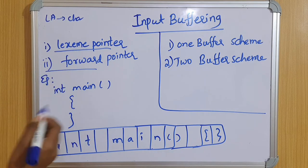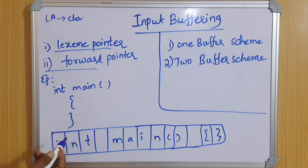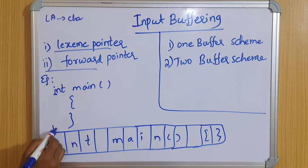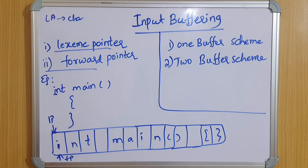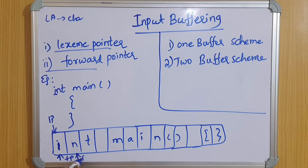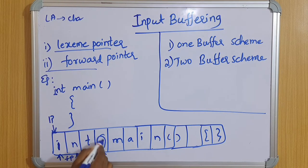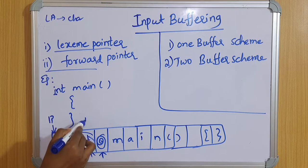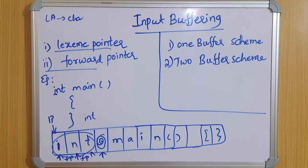For example, consider 'int main'. Initially both the lexeme pointer and forward pointer are placed at 'i'. It will scan and read this identifier, then the forward pointer will move to the next character, and again to the next, until it finds a blank space.